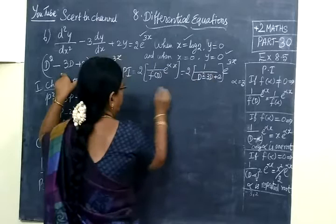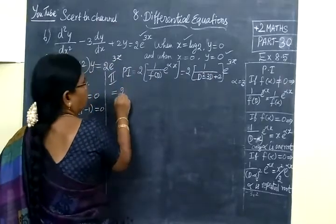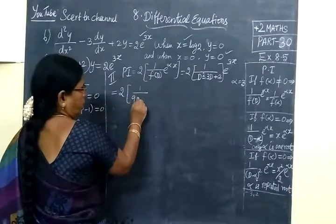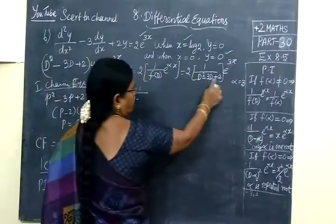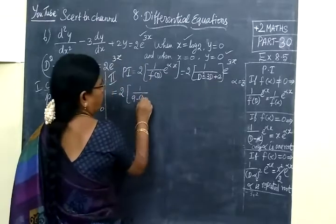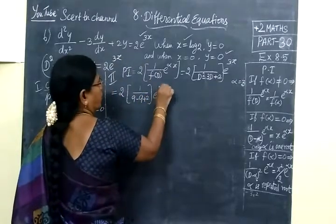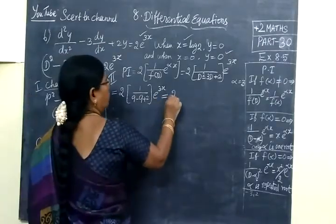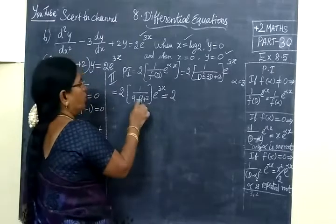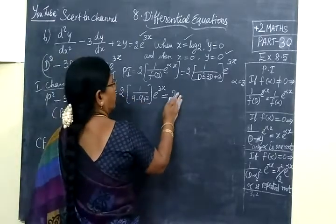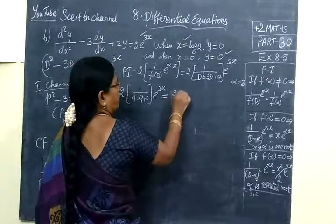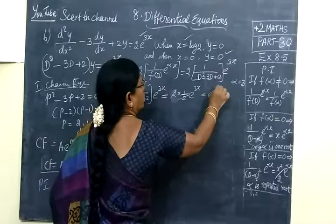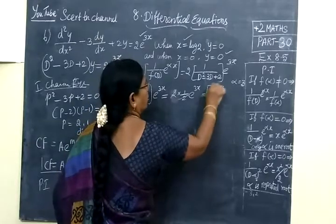So equal to 2 times 1/(3 squared minus 3 into 3 plus 2). Then e^(3x). So 9 minus 9 = 0 plus 2. 2 divided by 2 cancels. So you are getting e^(3x). This is PI.